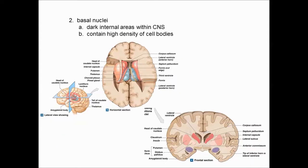Before getting to the rest of the midbrain, I should define nuclei. They are dark internal structures within the central nervous system — not red and blue, that's just the artist's depiction. Inside the cerebrum, areas of various shapes stain much darker than surrounding material because they have a high density of cell bodies. Examples include the globus pallidus, putamen, and thalamus.